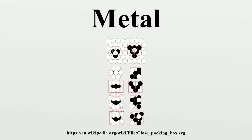The high density of most metals is due to the tightly packed crystal lattice of the metallic structure. The strength of metallic bonds for different metals reaches a maximum around the center of the transition metal series, as those elements have large amounts of delocalized electrons in tight binding-type metallic bonds.